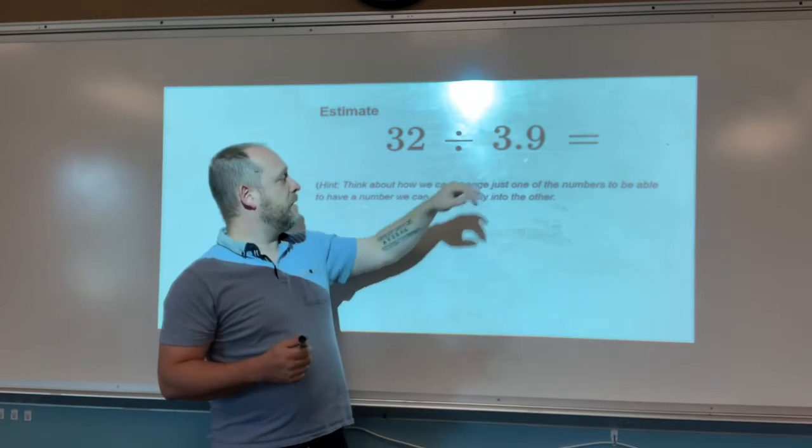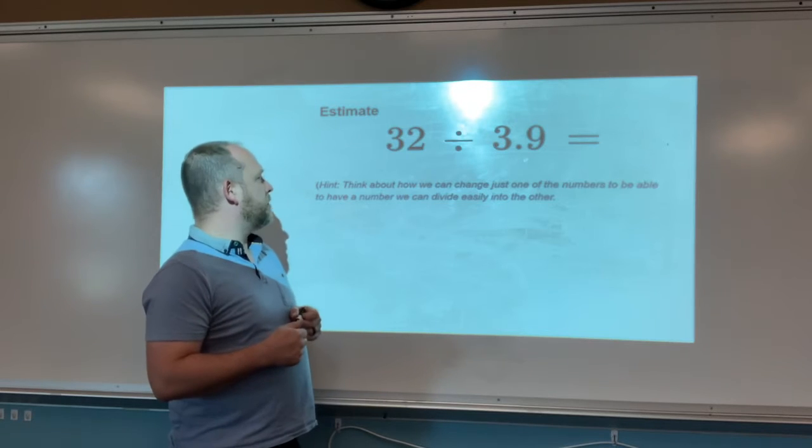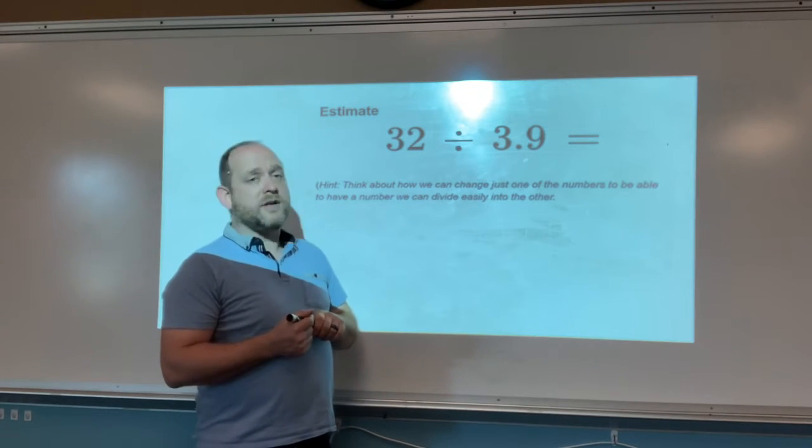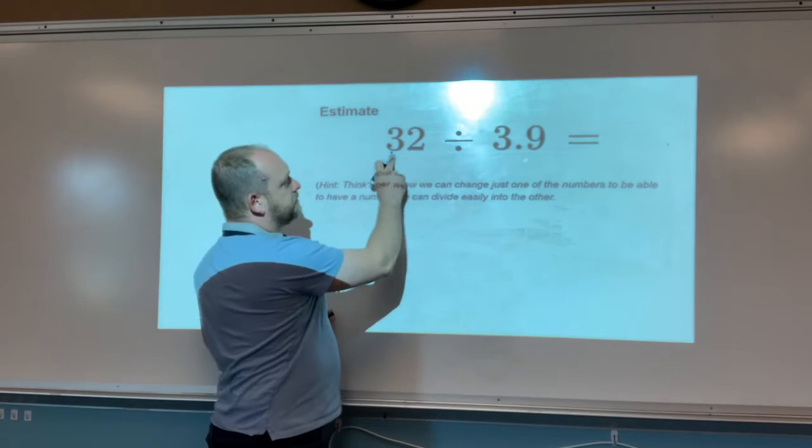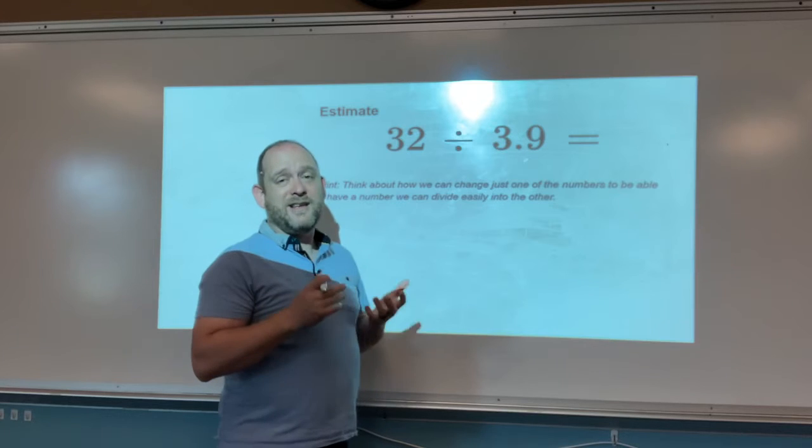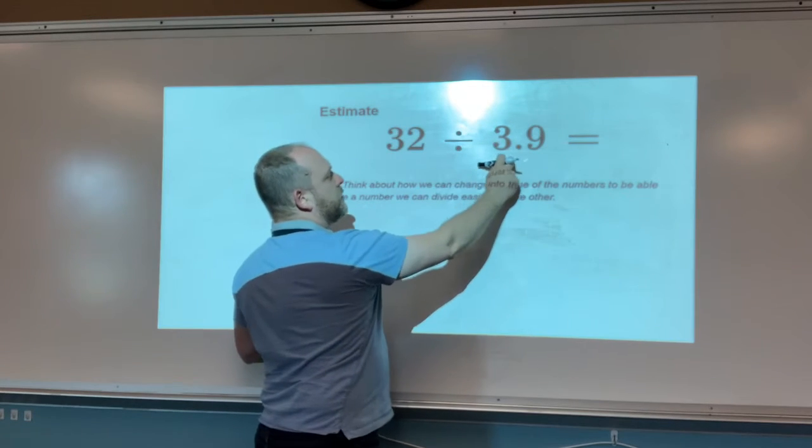So we have 32 divided by 3.9 and it says think about how we can change just one of the numbers to be able to have a number we can divide easily into the other. So let's look at our two numbers. We have 32. It is a two-digit number, but there's no decimal and it is an even number, which is generally easy to work with, divided by 3.9.